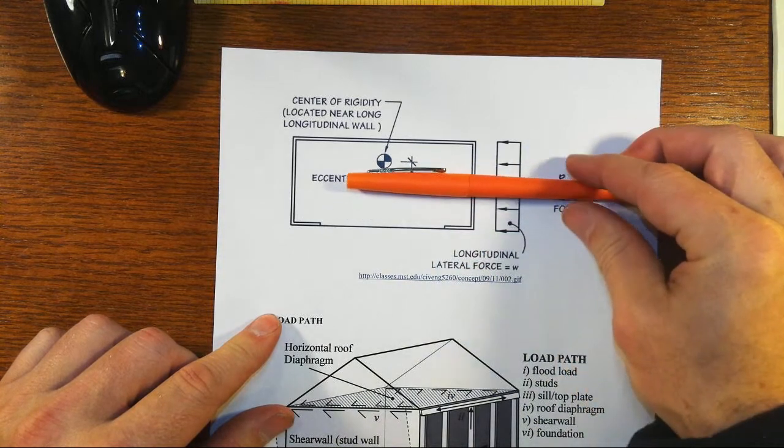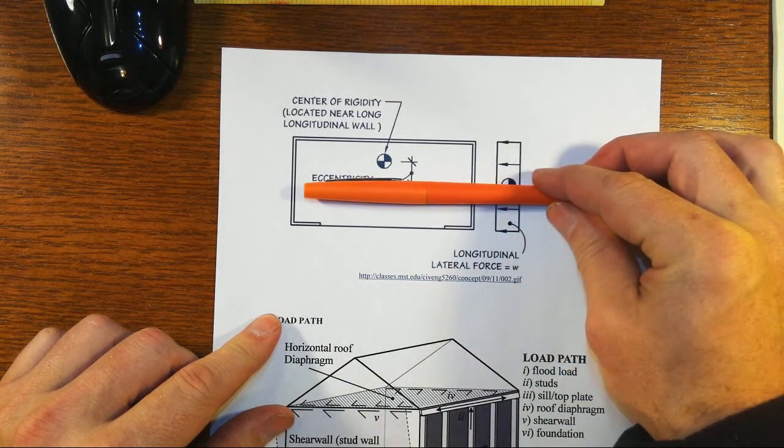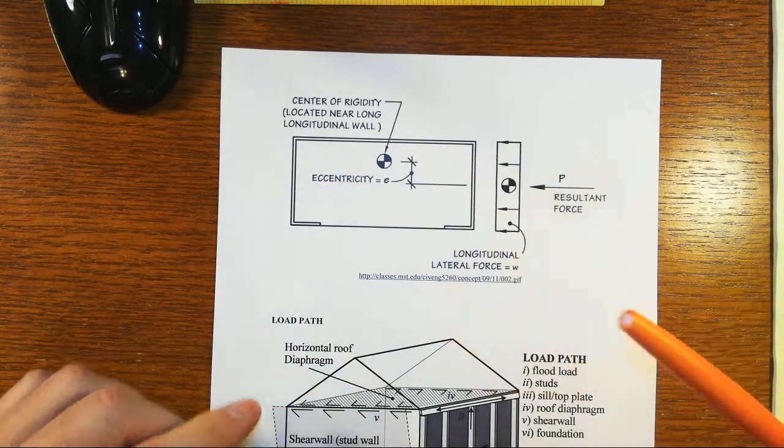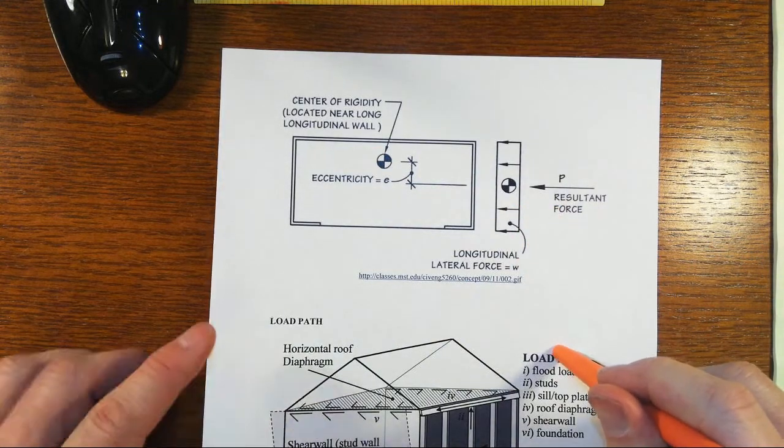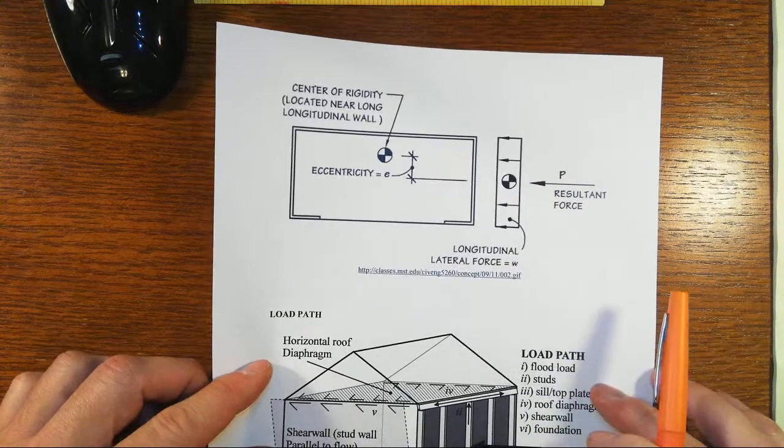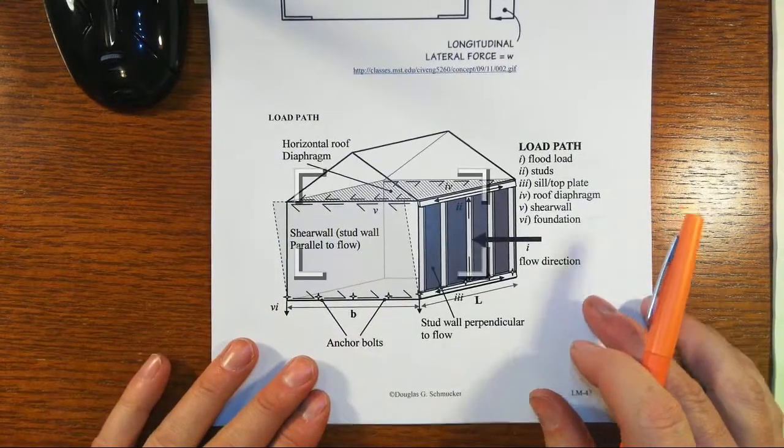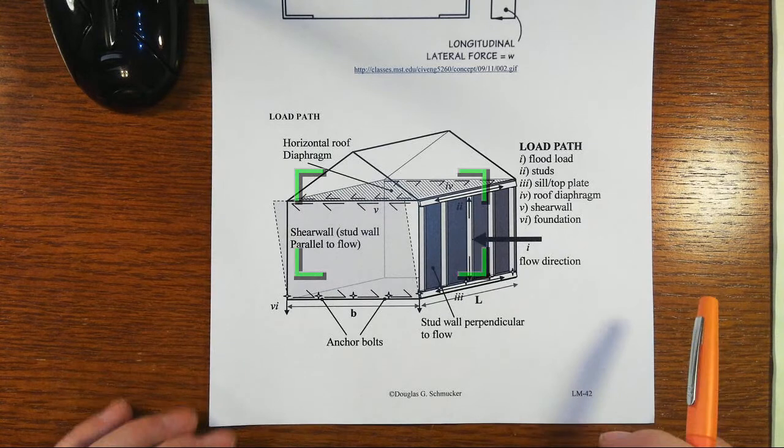And now that's going to create torsion as that set of forces wants to pass through, and the system is trying to resist it. So you don't tend to have to deal with that problem in flexible diaphragms, but rigid ones you absolutely do have to be concerned about that.